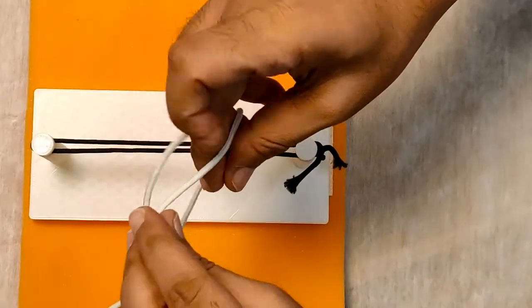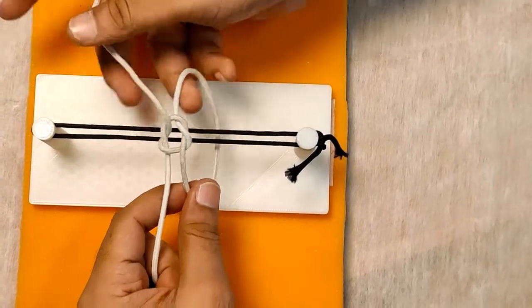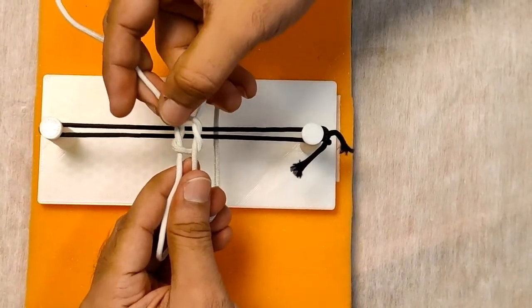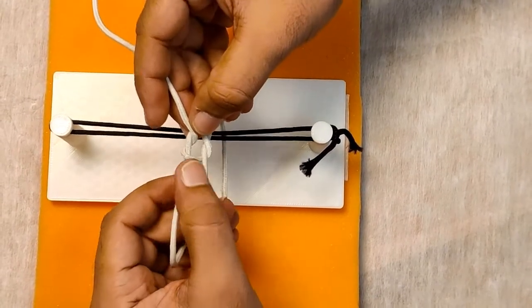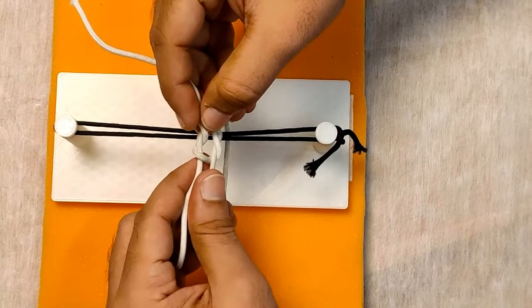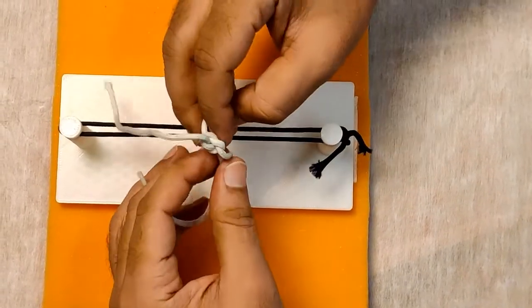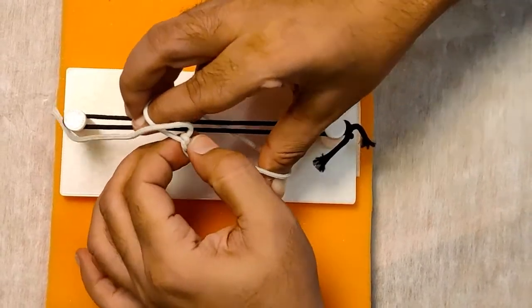look like this. You have a thread going above the loop and a thread going below the loop. Similarly, over here, a thread going above the loop and a thread going below the loop. When we tighten this up, it should look like this, but this knot has a tendency to slip.